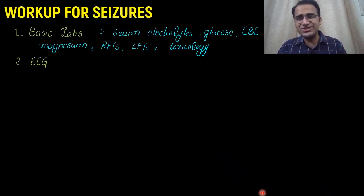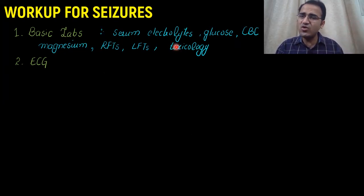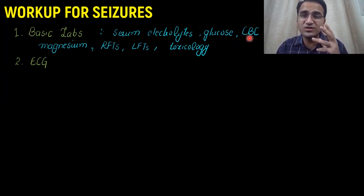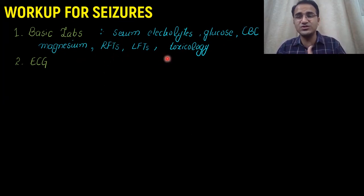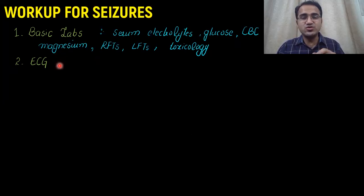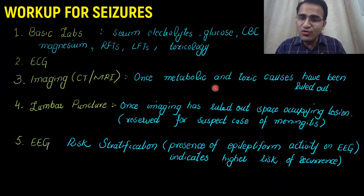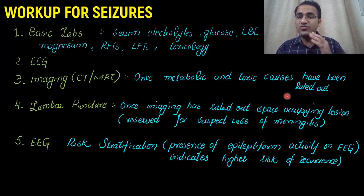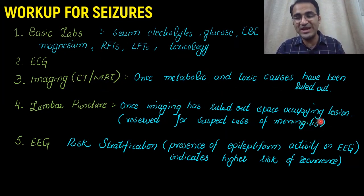When a patient presents with seizures, the basic labs include serum electrolytes, glucose, CBC to look for infection, magnesium, RFTs, LFTs, and toxicology — all things that can cause seizures. You should also do an ECG. Once metabolic and toxic causes are ruled out, proceed to CT and MRI in patients with recurrent seizures.